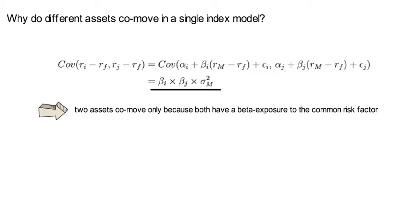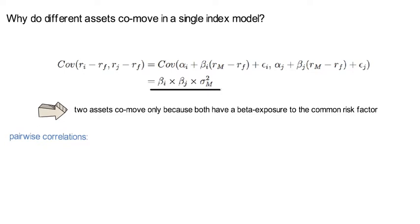We can also look directly at the pairwise correlations that a single index model induces. Let's work out what a correlation looks like between the excess return of asset i and the excess return of asset j. The correlation is defined as the covariance divided by both standard deviations. That coincides with the product of both betas times sigma squared m divided by sigma i times sigma j.